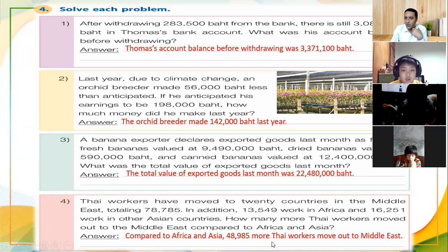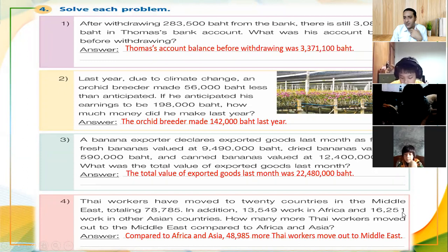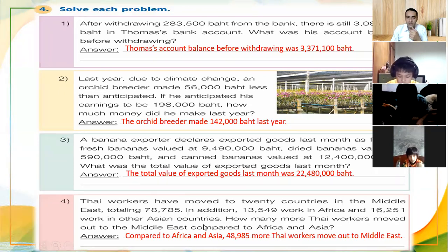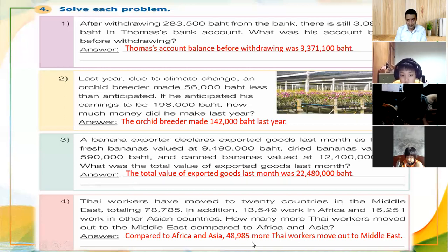So how did we solve this problem? We added the number of workers in Africa and the number in other Asian countries — approximately twenty-nine thousand total — and subtracted from the total number of seventy-eight thousand seven hundred eighty-five, giving us the answer: forty-eight thousand nine hundred eighty-five more Thai workers went to the Middle East.